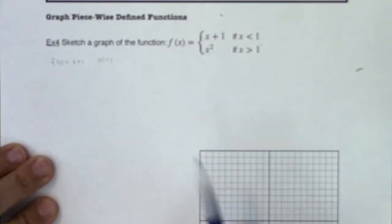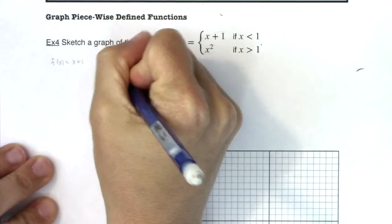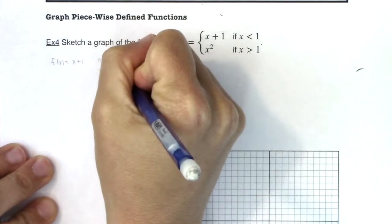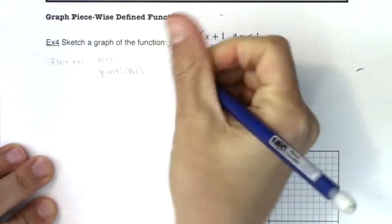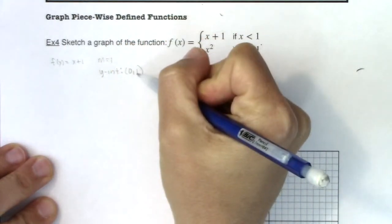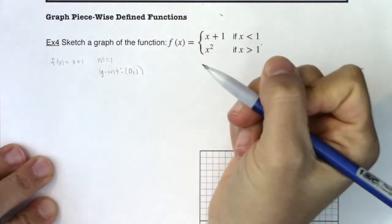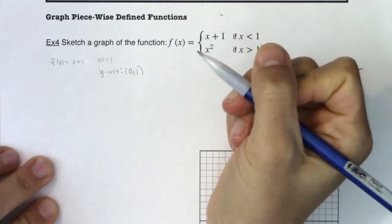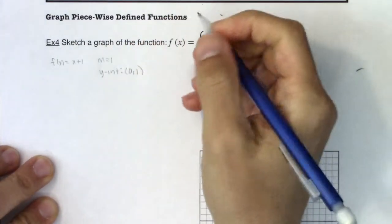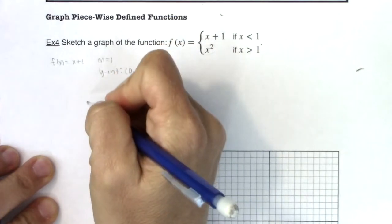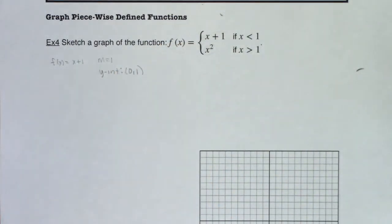So my y-intercept is 0, 1. I know I'm getting super technical here, but b in and of itself is 1, and the y-intercept is the ordered pair 0, 1. I'm just going to sketch that graph real quick — let me grab my ruler and we'll sketch it over here.